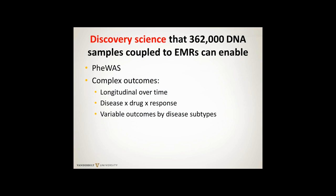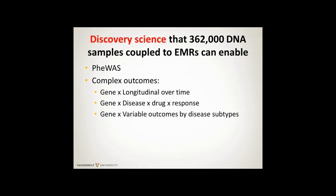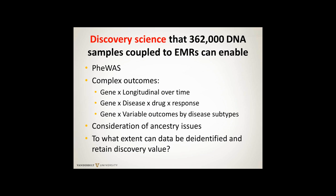Discovery science: the 362,000 DNA samples coupled to the EMR can enable PheWAS. Complex outcomes are not only longitudinal over time - drug responses and disease subtypes - but gene-by-environment interactions across all of those. We have to think about ancestry and develop ways of generating larger African-American cohorts. We probably have 50,000 African-Americans across eMERGE right now. And there are issues around privacy that we still need to address.